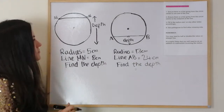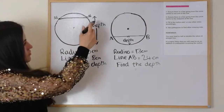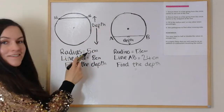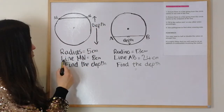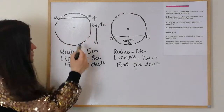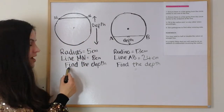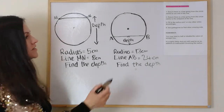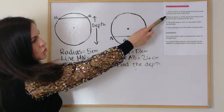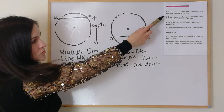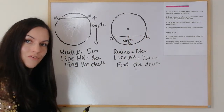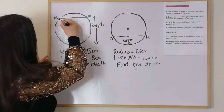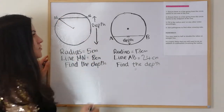So we'll start with our first example. We've got the circle drawn, the word 'depth' written, we're told that the radius is five centimetres and that the line MN is eight centimetres, and we're asked to find the depth. We'll go through our four-step guide. Step one says ensure there's a line going from the circle centre to one end of the line — so there's the circle centre, and I'm drawing a line from here to that end of the line.